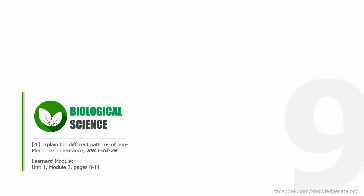Welcome back to this series — this is The Knowledge Catalog, Grade 9 Biology. This is the ninth video in the series. I'm sorry I haven't been uploading in a while; I've been busy with comprehensive examinations. But I am back now, and this video is going to tackle the learning competency of explaining the different patterns of non-Mendelian inheritance. You will need a copy of the learner's module, particularly Unit 1, Module 2, pages 8 to 11.